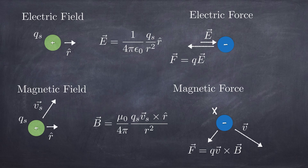Another point: V cross B in this case points up and to the right, but because it's a negative target charge, the force points down and to the left.